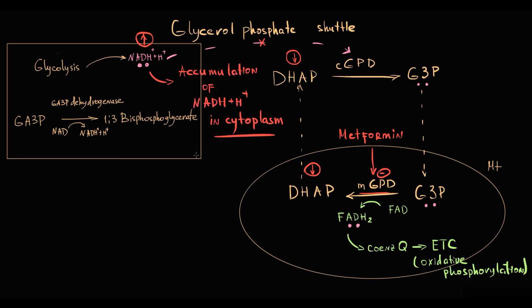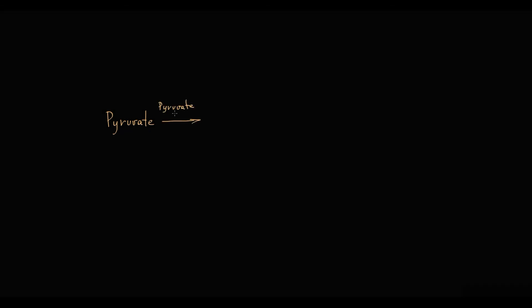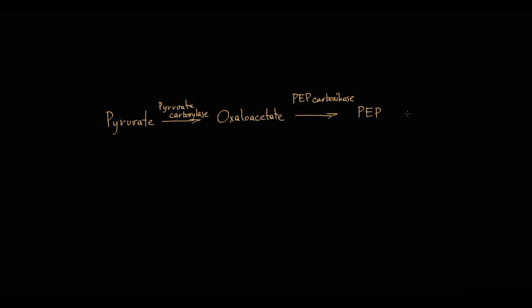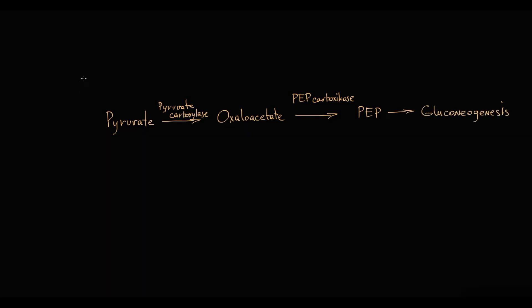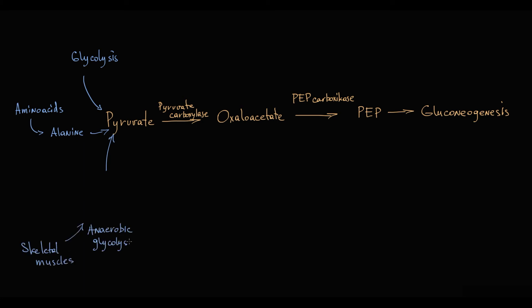High cytosolic NADH stimulates conversion of pyruvate to lactate. Recall that in gluconeogenesis, pyruvate is a key substrate for glucose production — it is transported to the mitochondria where pyruvate carboxylase converts it to oxaloacetate, which then leaves the mitochondria and is converted by PEPCK to phosphoenolpyruvate for gluconeogenesis. Pyruvate can be generated by glycolysis, catabolism of glucogenic amino acids via alanine, or — most importantly — from lactate produced by anaerobic glycolysis in skeletal muscle, which is taken up by the liver in the well-known Cori cycle. The liver is a major consumer of lactate, converting it to pyruvate for gluconeogenesis.